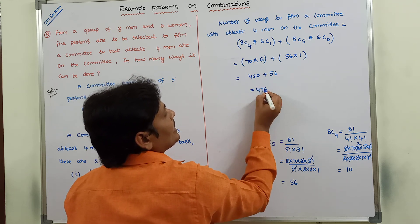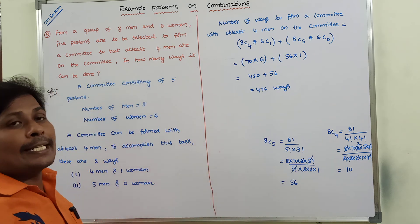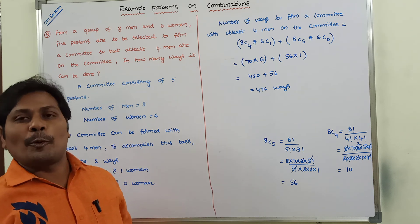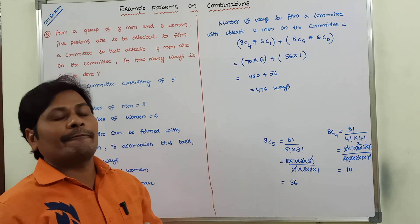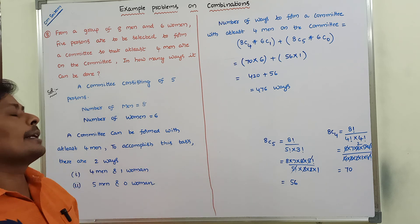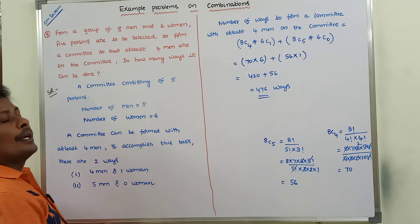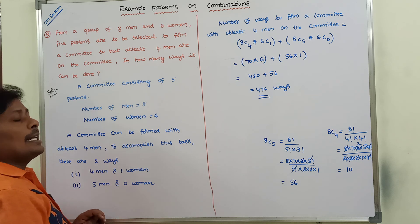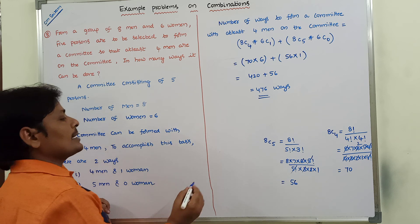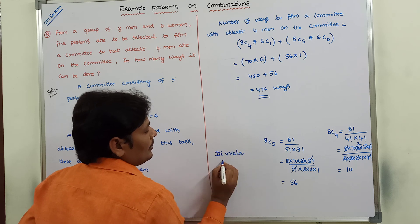That equals 476 ways to form a committee with at least four men among the eight men and six women. So in this way we solve the given problem. Thank you for watching this video. If you like this video, please share it with your friends and classmates and subscribe to my channel.